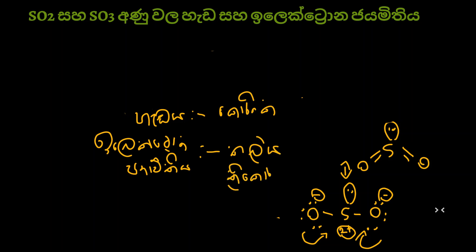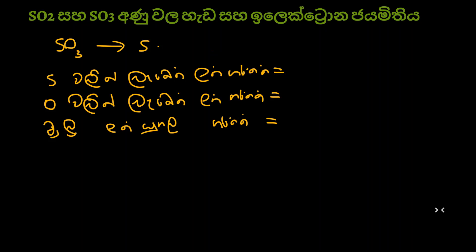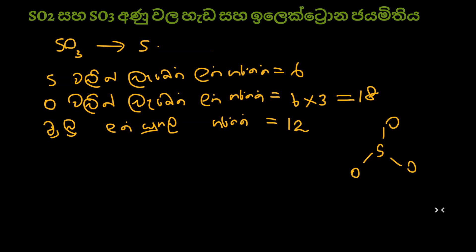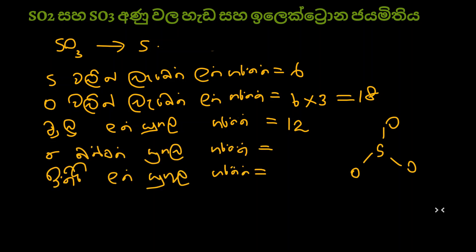Let us look at the diagram now. Regarding SO3's shape and electron geometry, for SO3 the central atom is sulfur. Just as we calculated for SO2, similarly the electrons on oxygen and sulfur are counted. For each of the three oxygen atoms, a sigma bond is formed, giving three sigma bond pairs.